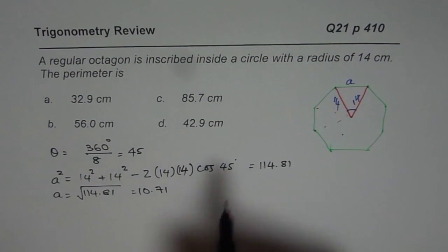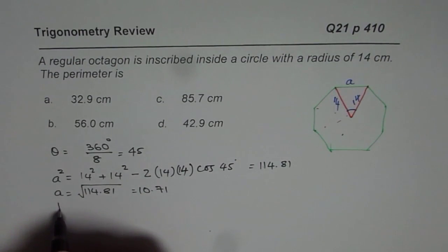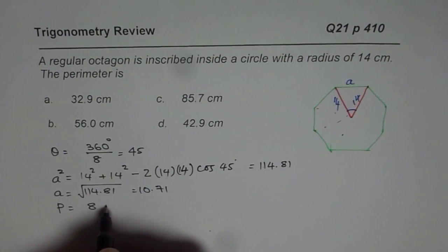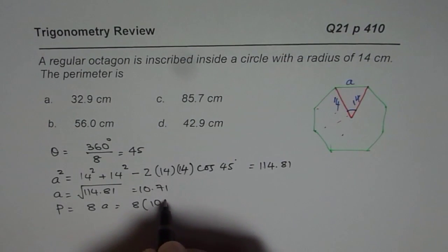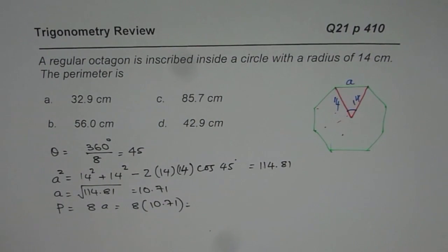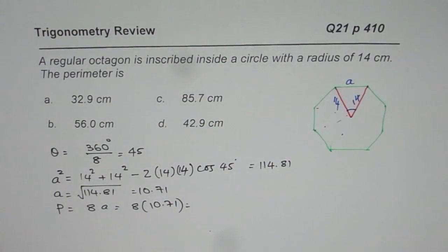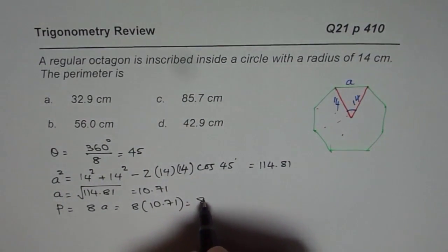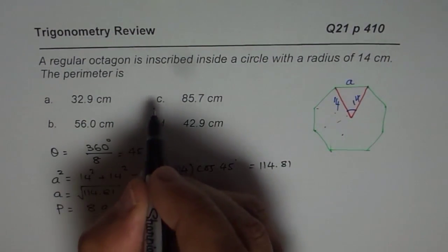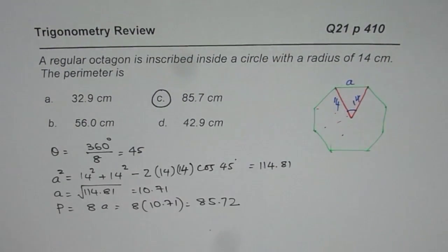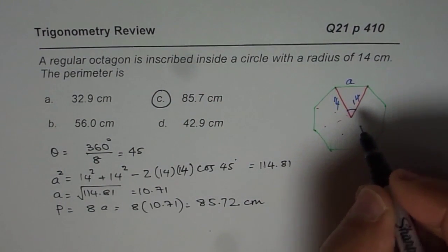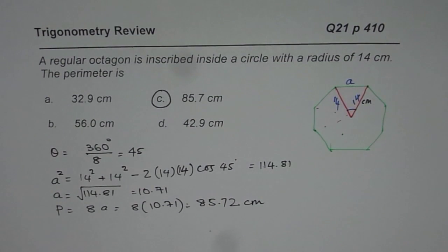Now what is the perimeter? We get perimeter as 8 times A. So it is 8 times 10.71. Let us multiply: 10.71 times 8 gives 85.72. So the perimeter is 85.72 centimeters, which matches option C. That is how you can find the answer. The units are in centimeters since all given values were in centimeters. I hope it helps. Thank you and all the best.